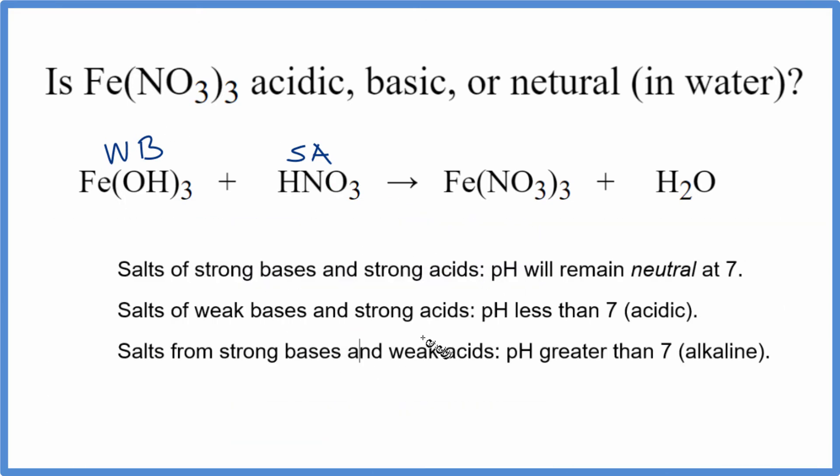According to our rules, if we have a weak base, the iron(III) hydroxide, and the strong acid, this HNO3 nitric acid, the resulting solution will have a pH that's less than 7. So it's going to be acidic.